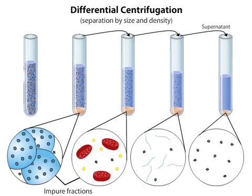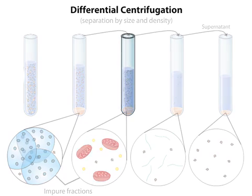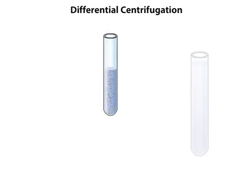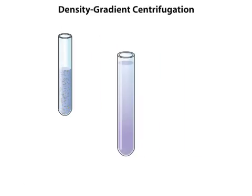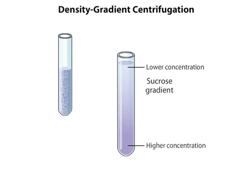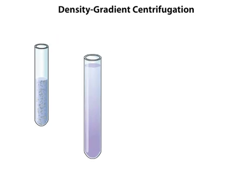A greater degree of purification can be achieved by resuspending the pellets in solution and then performing density gradient centrifugation, in which the sample is made to sediment through a gradient of a dense substance, such as sucrose. At the top of the gradient, the sucrose concentration is lower than at the bottom. There are two main types of density gradient centrifugation.